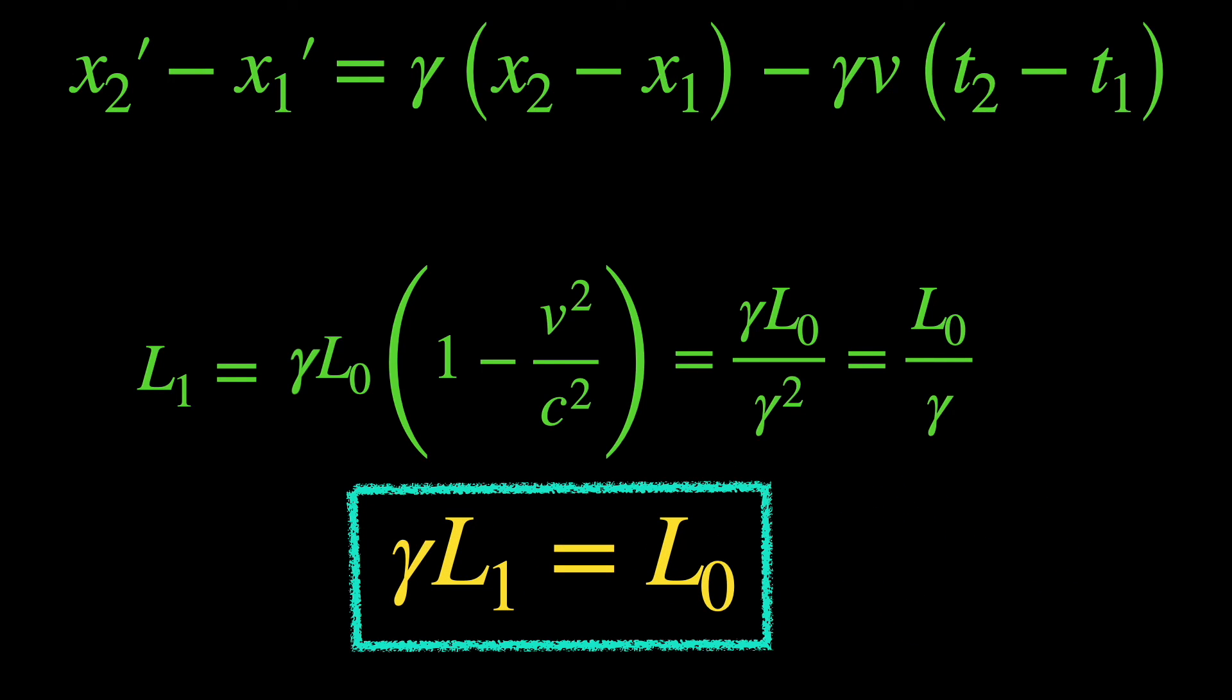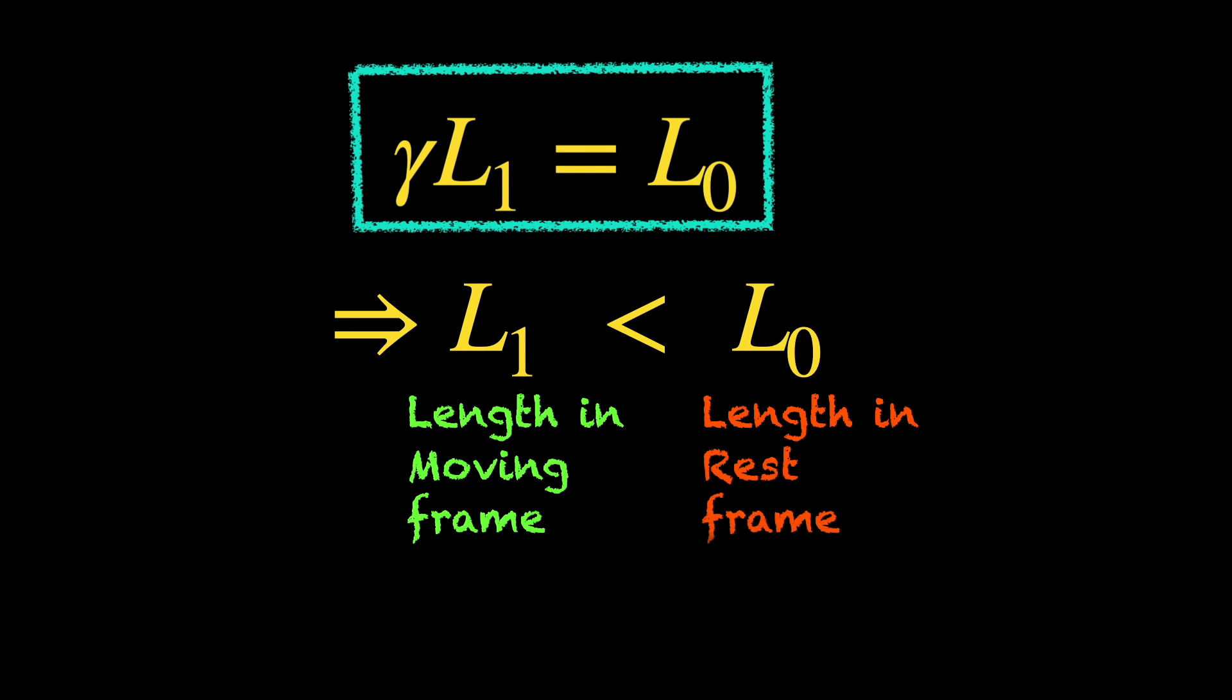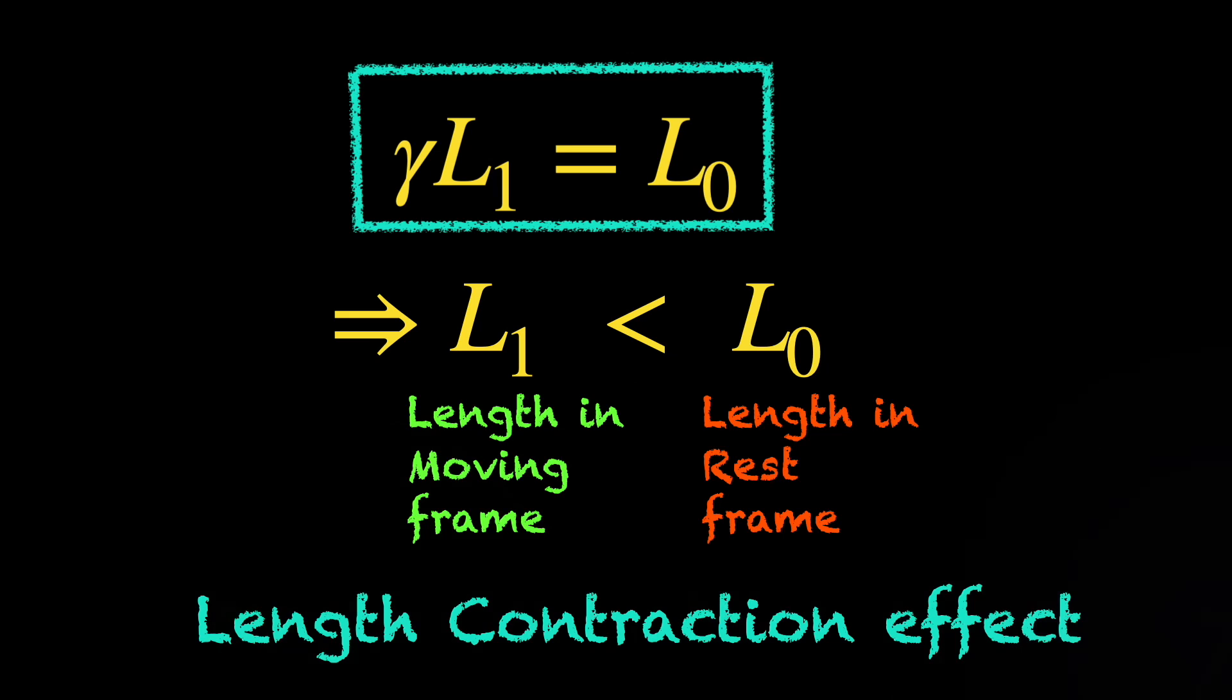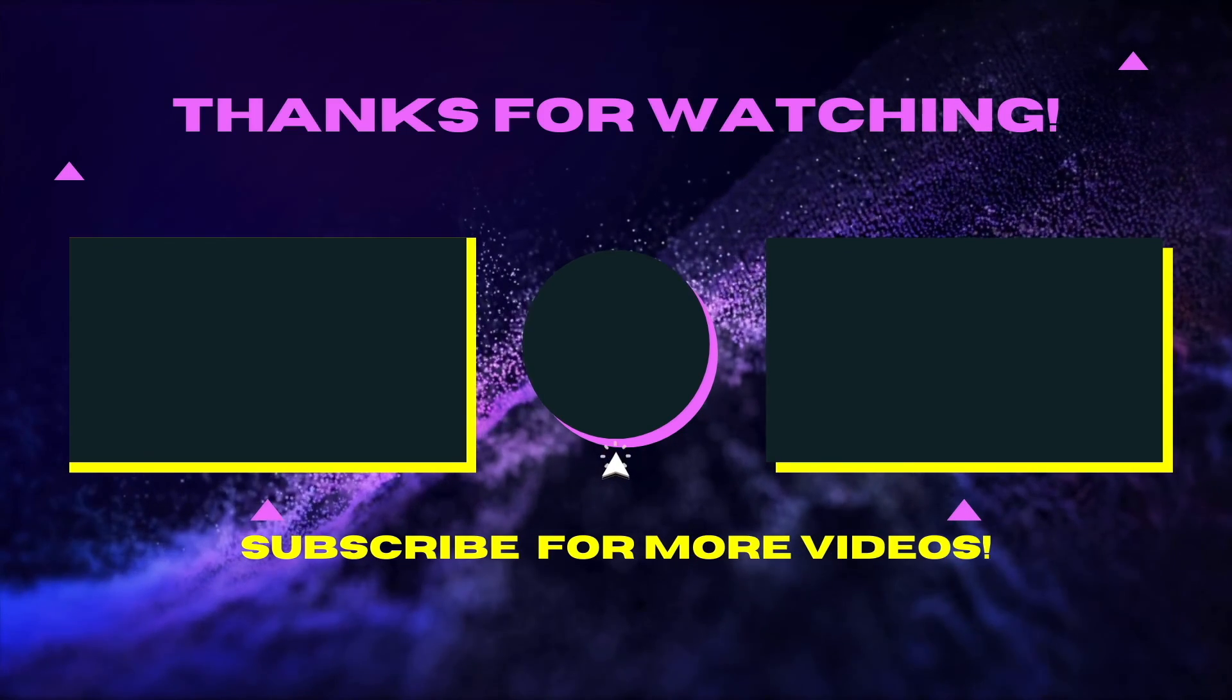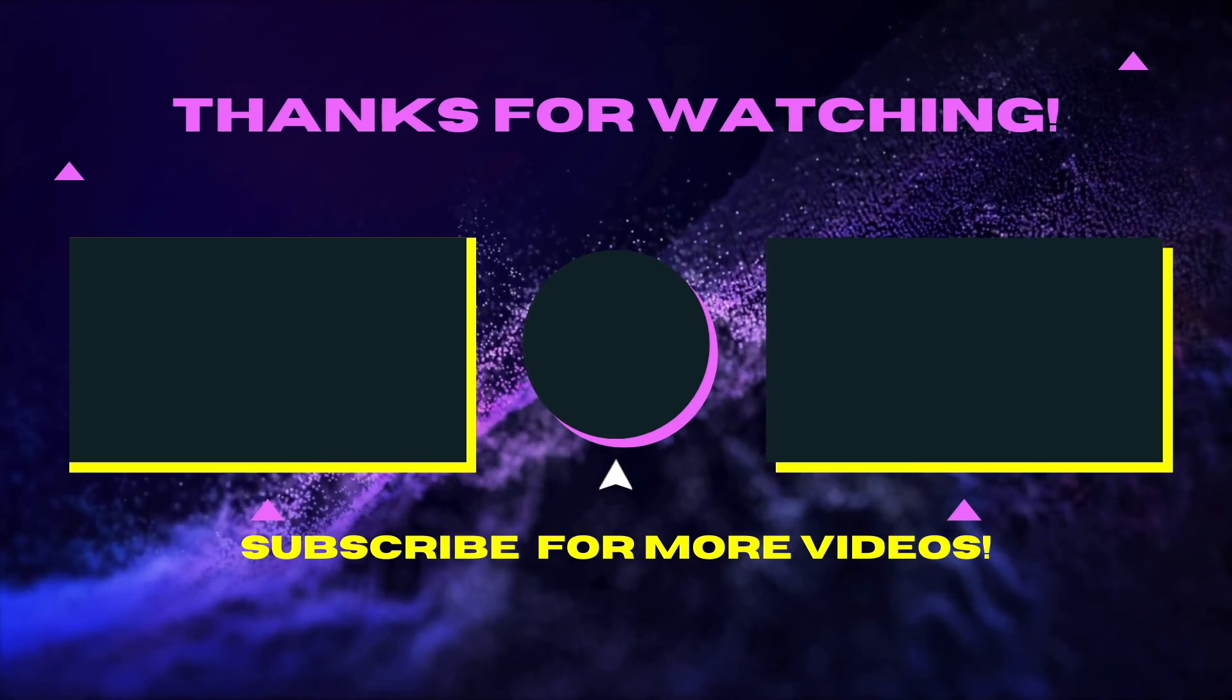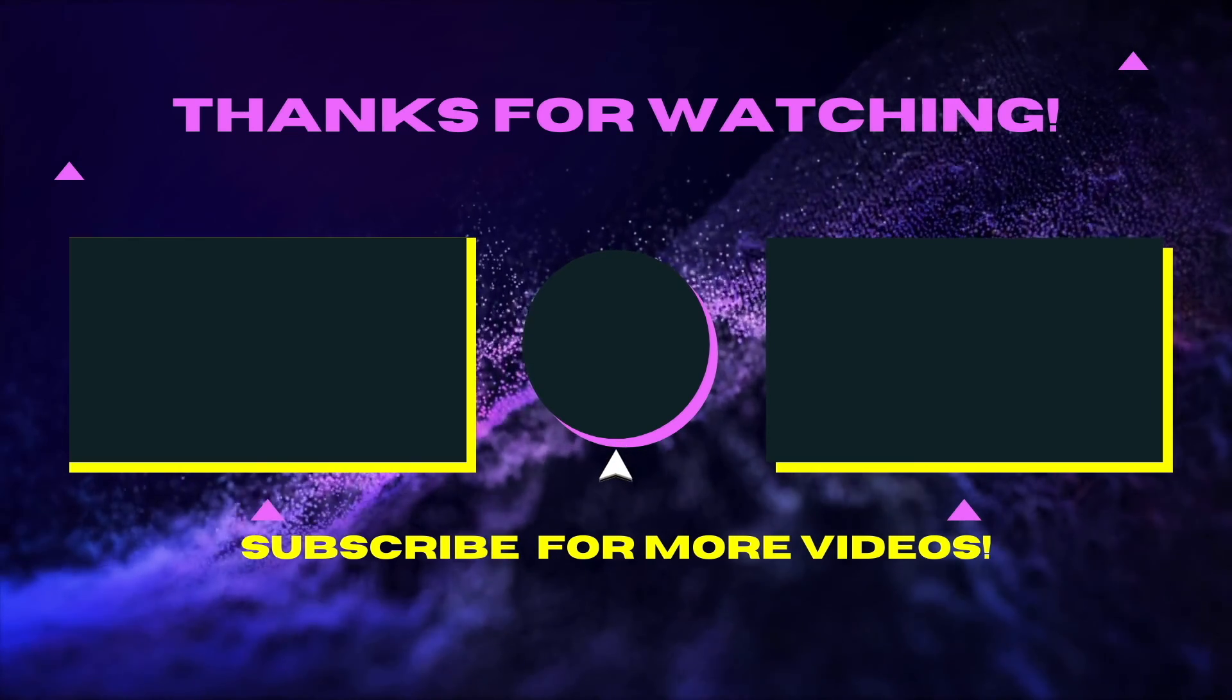As you can see, the Lorentz factor, which we know is always greater than 1, now multiplies with L1, the measured length in the moving frame, making it shorter than L0, the rest frame length. So do you see why we need to be careful while using the Lorentz transformation equations or any formula? Because if we don't relate to what is physically going on behind the math, we can potentially run into trouble. The Lorentz transformation equations, if applied correctly, do demonstrate the length contraction effect in a mathematical way. But if you want a more physical perspective on this, watch this video on the right. See you there, bye-bye.